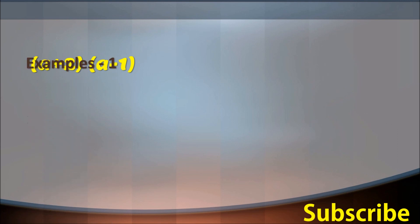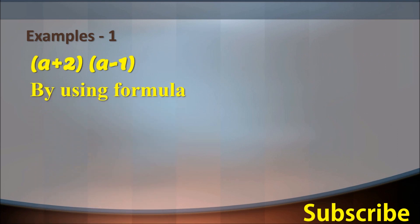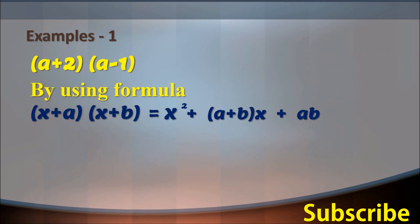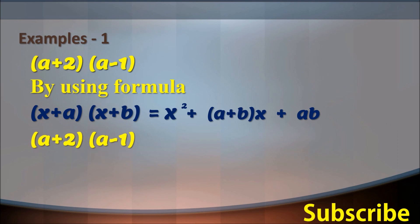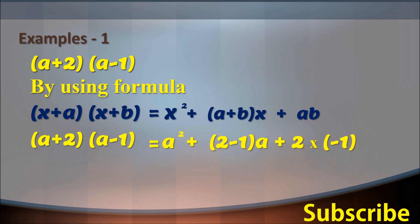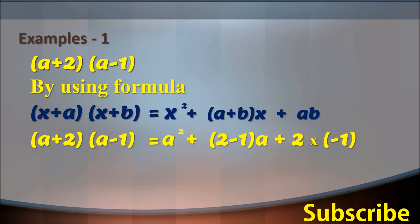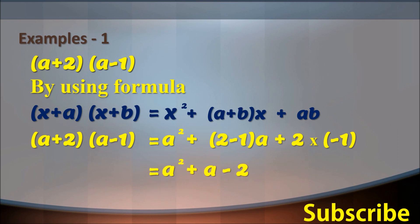Example one: a plus 2 into a minus 1. Using the formula x plus a into x plus b equals x square plus a plus b into x plus ab. Answer: a plus 2 into a minus 1 equals a square plus 2 minus 1 into a plus 2 into negative 1, which equals a square plus a minus 2.